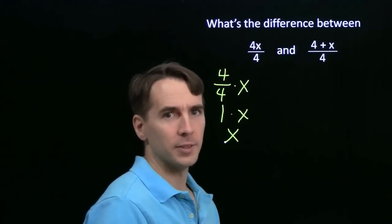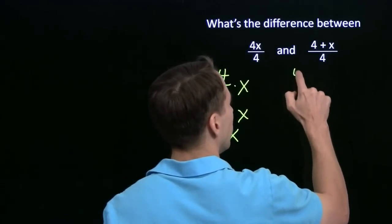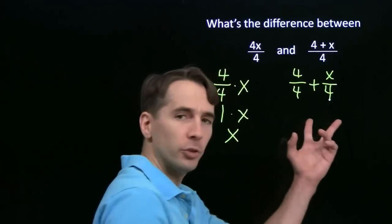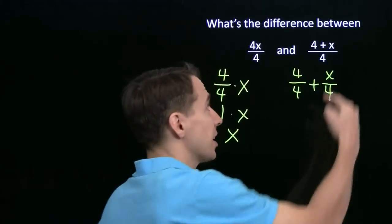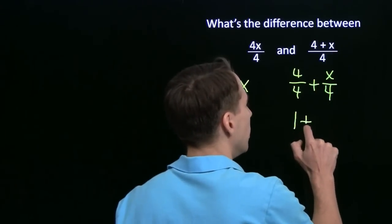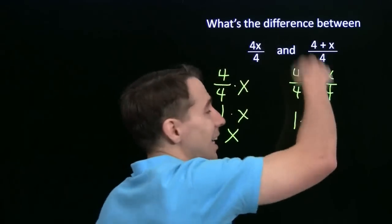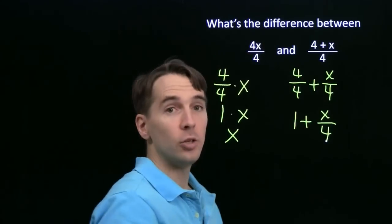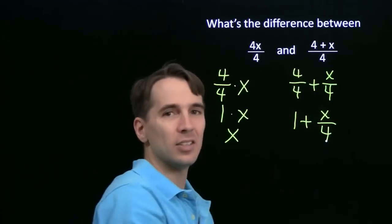How else can we write this? We can write it as 4 over 4 plus x over 4 — the sum of two fractions. Denominators are the same, keep the denominator, add the numerators, so you get 4 plus x. This is the same expression. And again, 4 over 4 is just 1, so we get 1 plus x over 4. We still have the 4 there — we can't just cancel it away. Here we have multiplication in the numerator, so we can cancel. Here we have addition in the numerator, so we can't just cancel away the 4s.